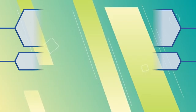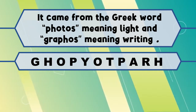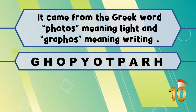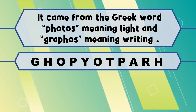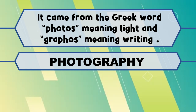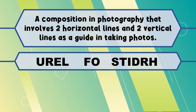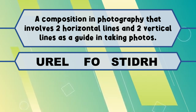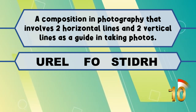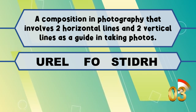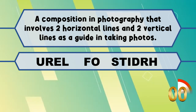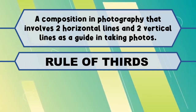Let's start with number 1. It came from the Greek word photos meaning light and graphos meaning writing. If your answer is photography, you are correct. Next, number 2. A composition in photography that involves two horizontal lines and two vertical lines as a guide in taking photos. If your answer is rule of thirds, that is excellent.